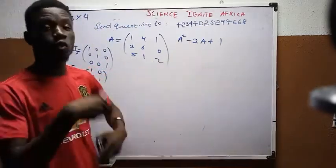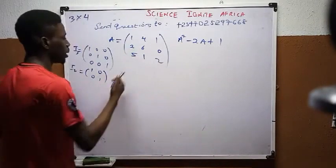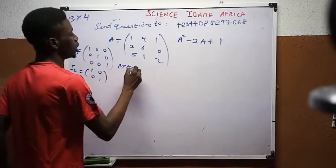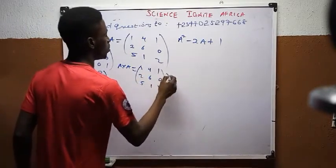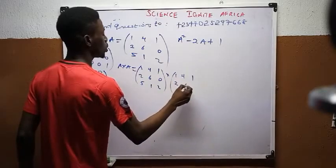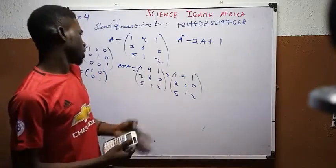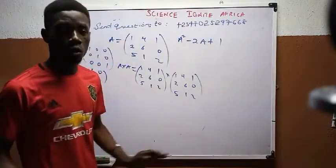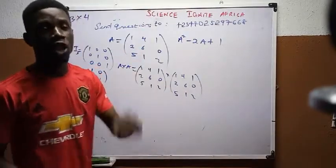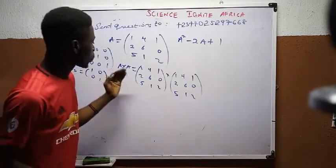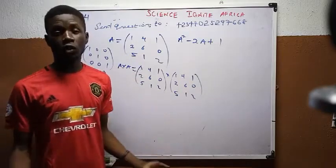Let's compute A squared. A squared is simply A times A — so we multiply A with A. The matrix A is: [1, 4, 1 / 2, 6, 0 / 5, 1, 2], multiplied by the same matrix. Don't square each individual component — A squared means A times A, carried out as proper matrix multiplication.